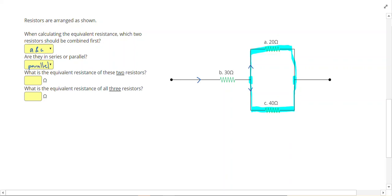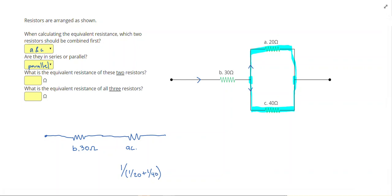Again, I want to redraw my circuit. I still have resistor B, which is 30 ohms. But instead of this entire section that I highlighted in blue, I just want to draw one resistor. And I'm going to call that resistor AC. To find resistor AC, I'm going to use the parallel equation. 1 divided by 1 over 20 plus 1 over 40. And that gives me 13.3 ohms.